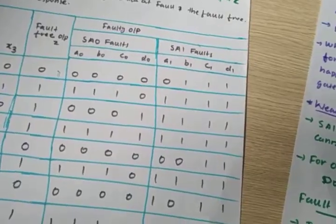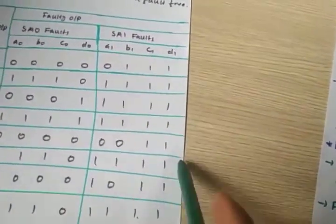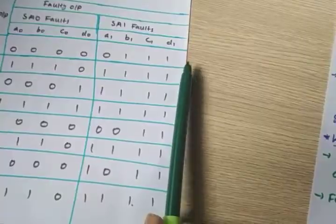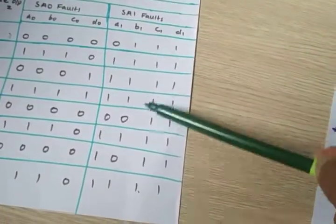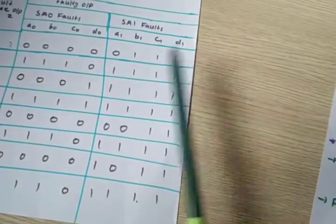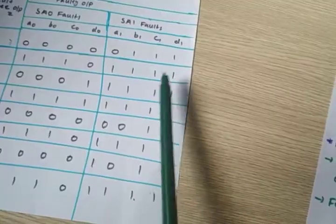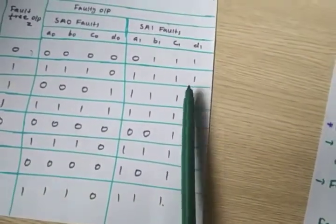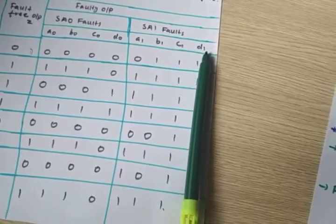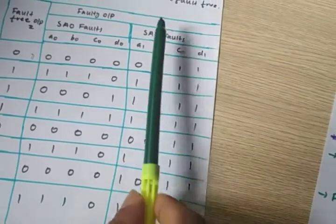Similarly, consider columns c1 and d1. For c1, the value is always 1; d1 is always the same as c1. That means c1 equals d1 for all the test variables. So c1 and d1 for stuck-at-1 fault are always called indistinguishable or equivalent faults.